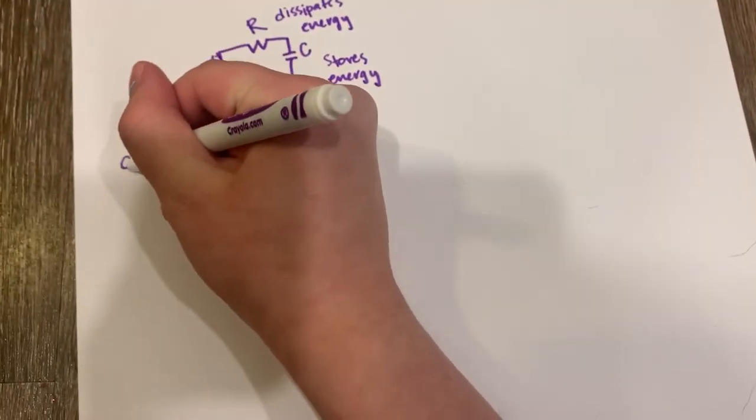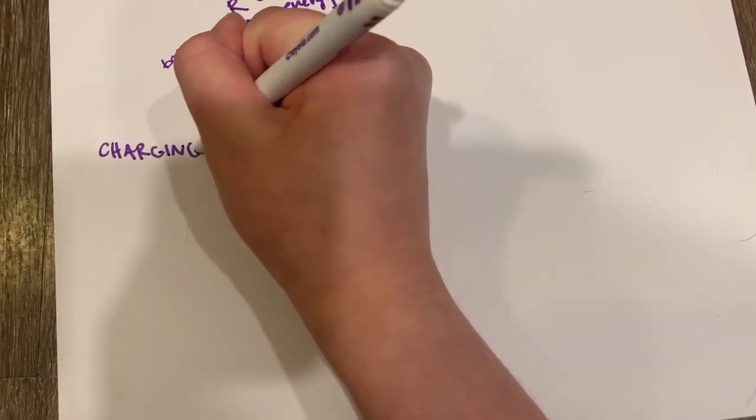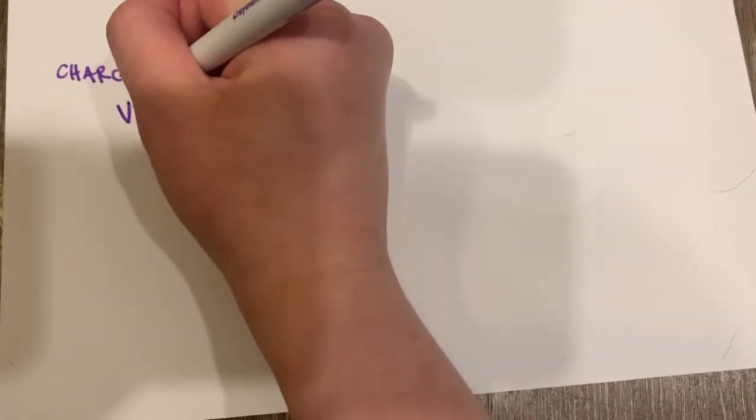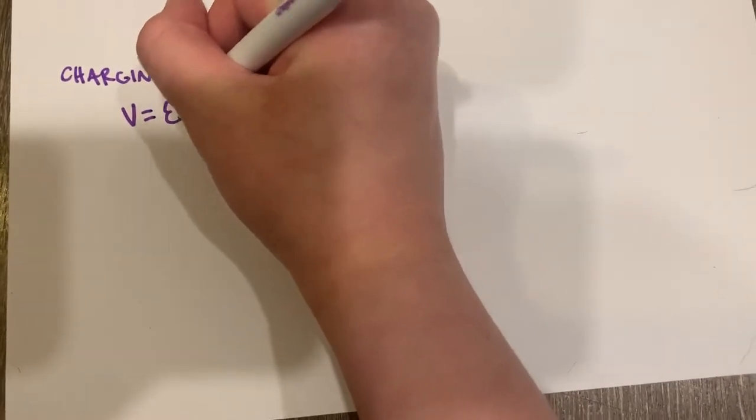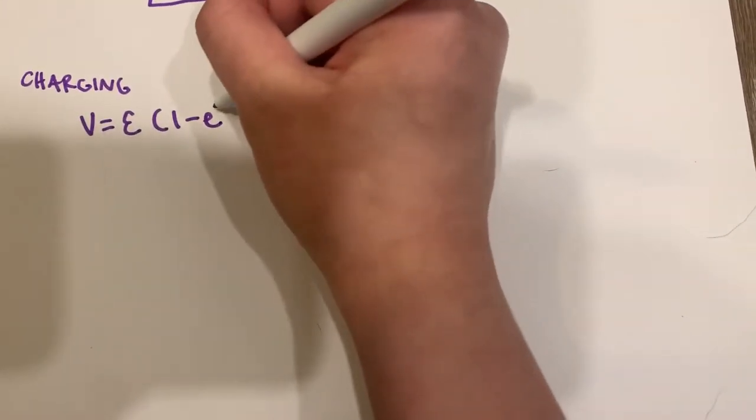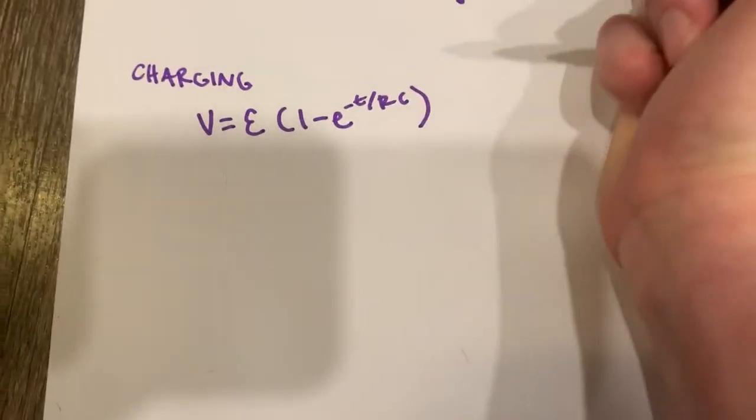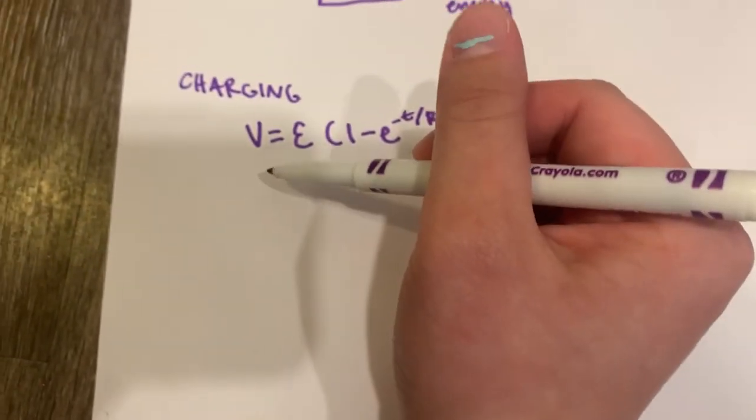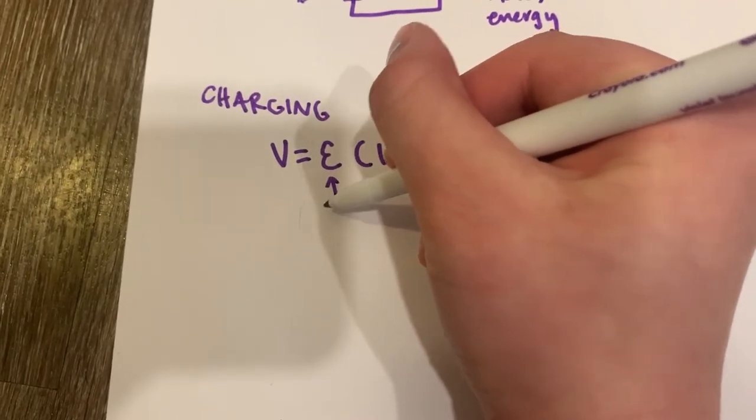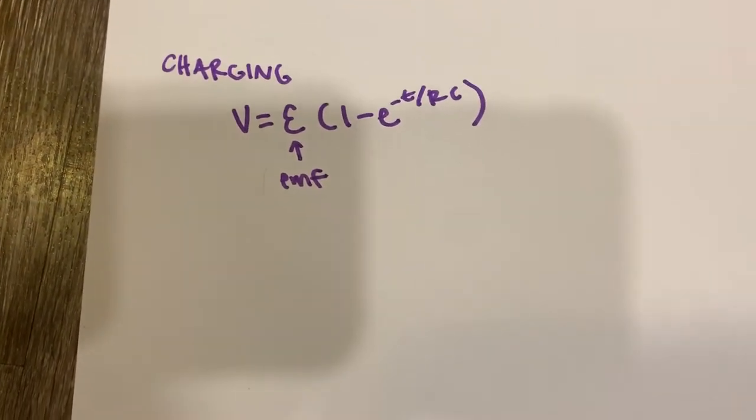First one is going to be for the charging. And I'll explain what each of these variables stands for in just a minute. All right, so this is the equation for charging a capacitor. This V right here stands for voltage. And then this right here is going to stand for your EMF, which is the energy provided by the battery.